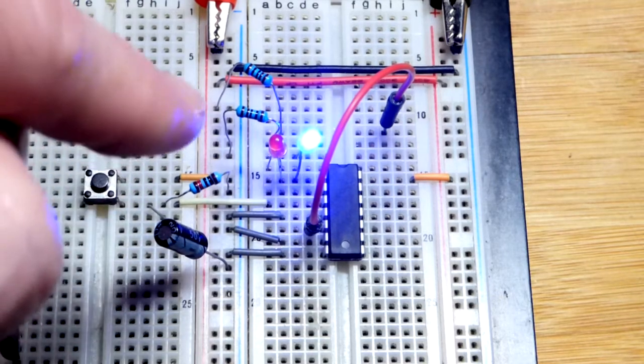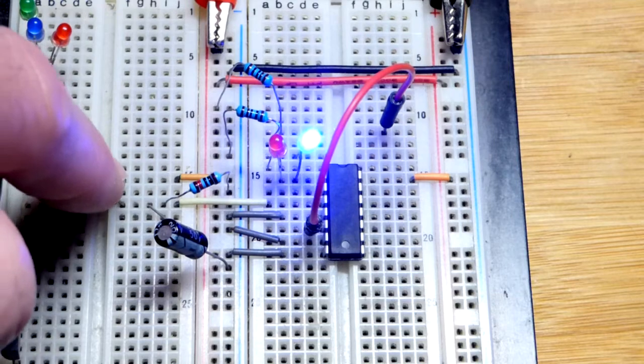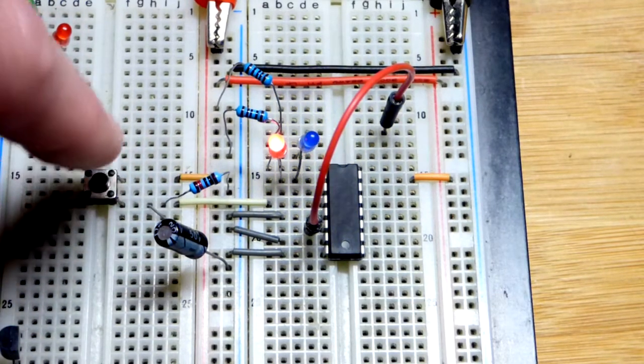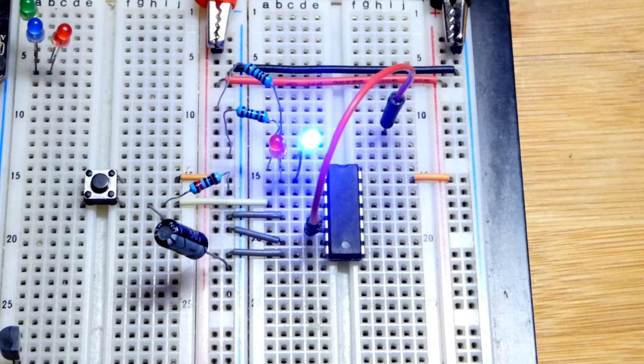With that capacitor, a high input instantly charged the capacitor. It takes a little bit of time to discharge, so a really rapid low-high won't matter. It stays high, and we just have to wait a fraction of a second for it to go low again.